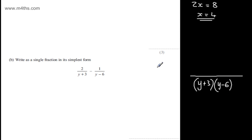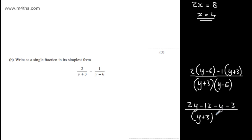So we're going to have y plus 3 multiplied by y minus 6. In the numerator, I've combined the fraction, so I'm going to have 2 lots of y minus 6 minus 1 lot of y plus 3. If I expand the numerator, I'm going to have 2y minus 12 minus y minus 3.